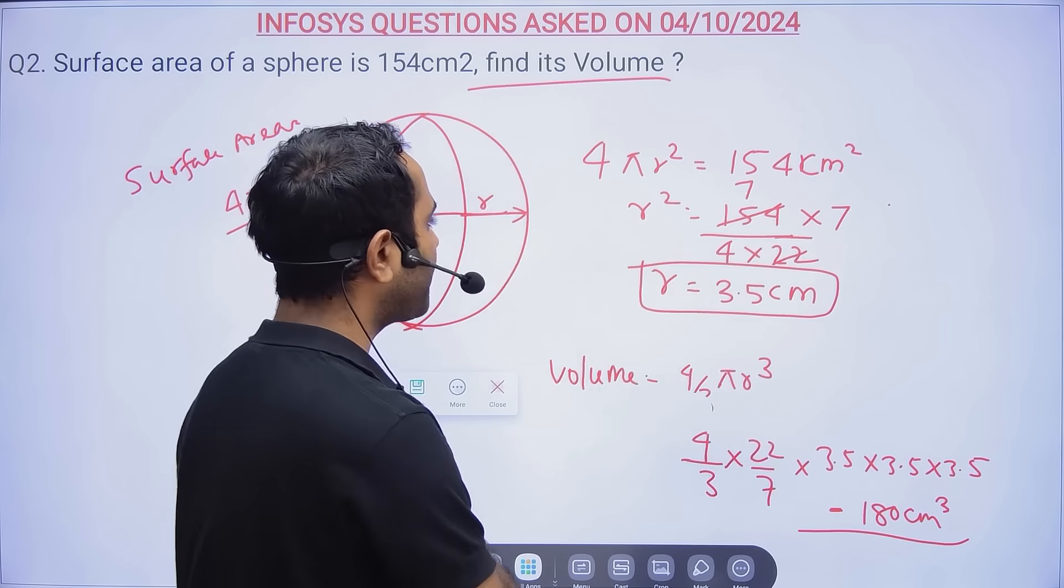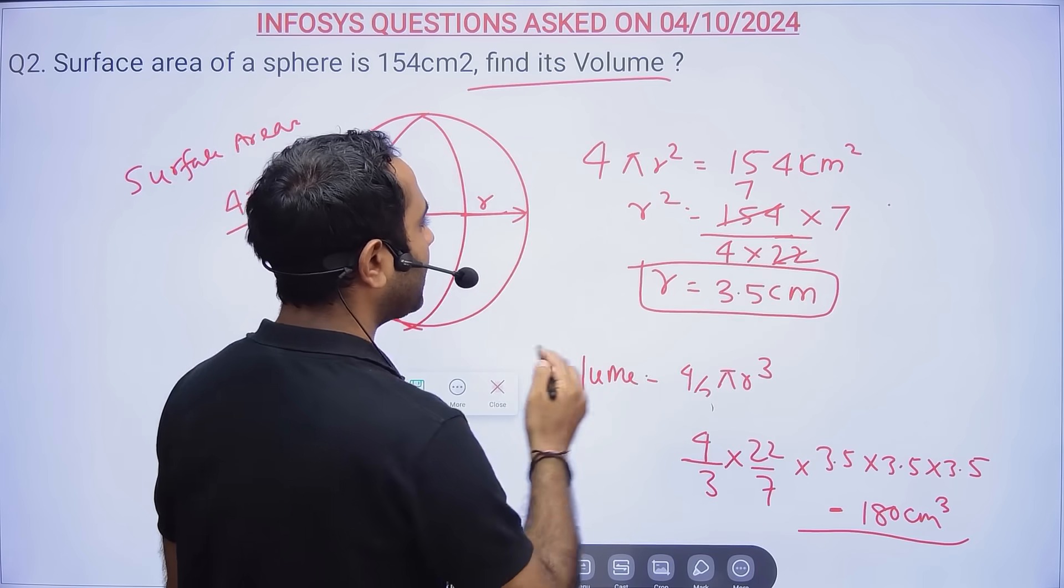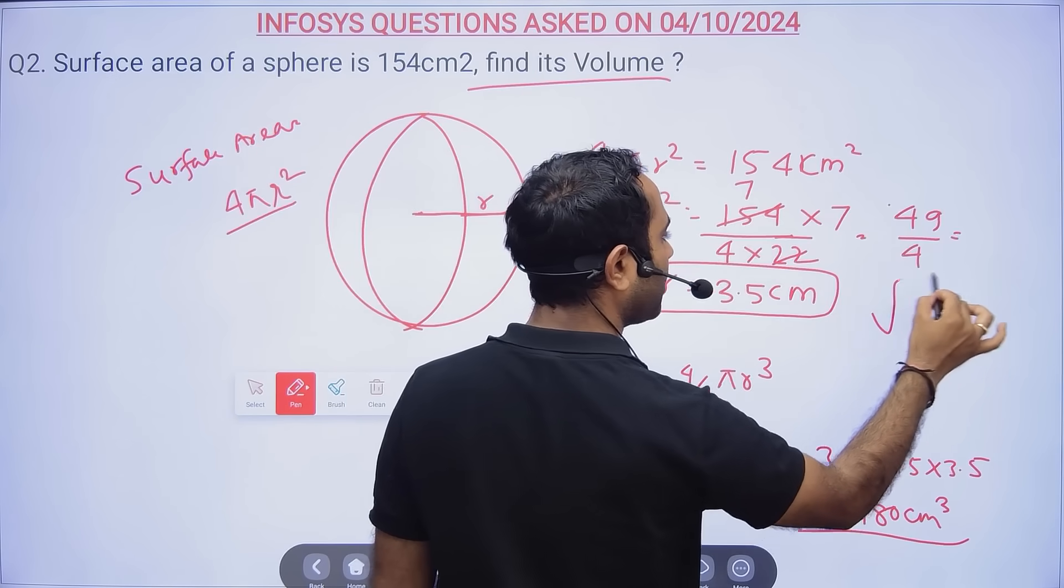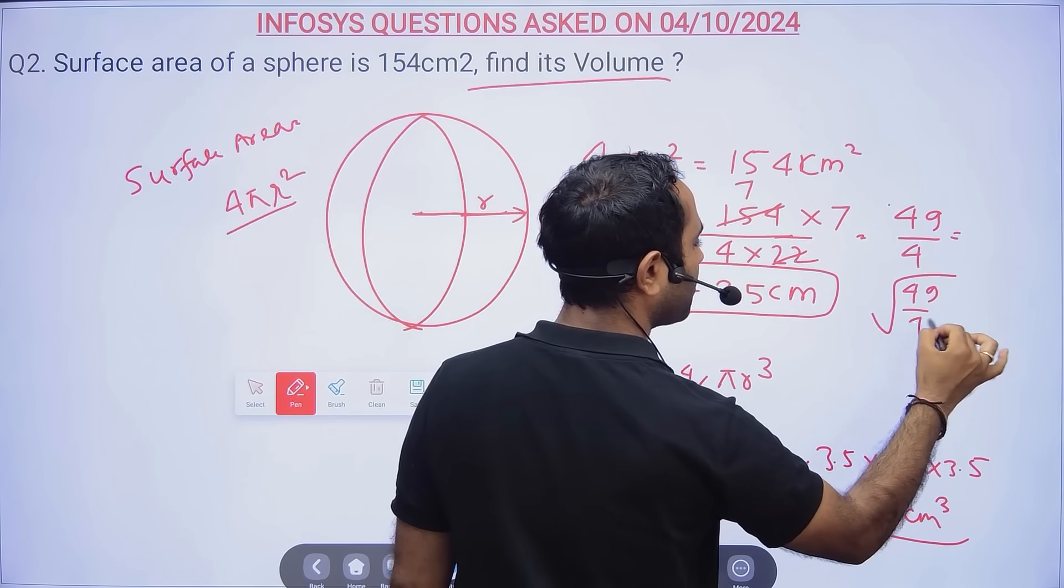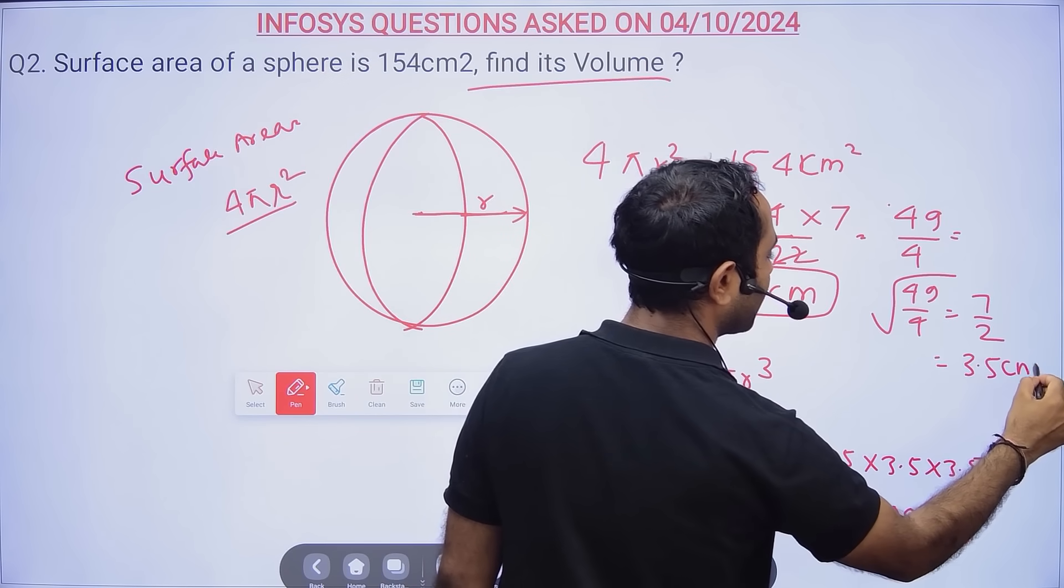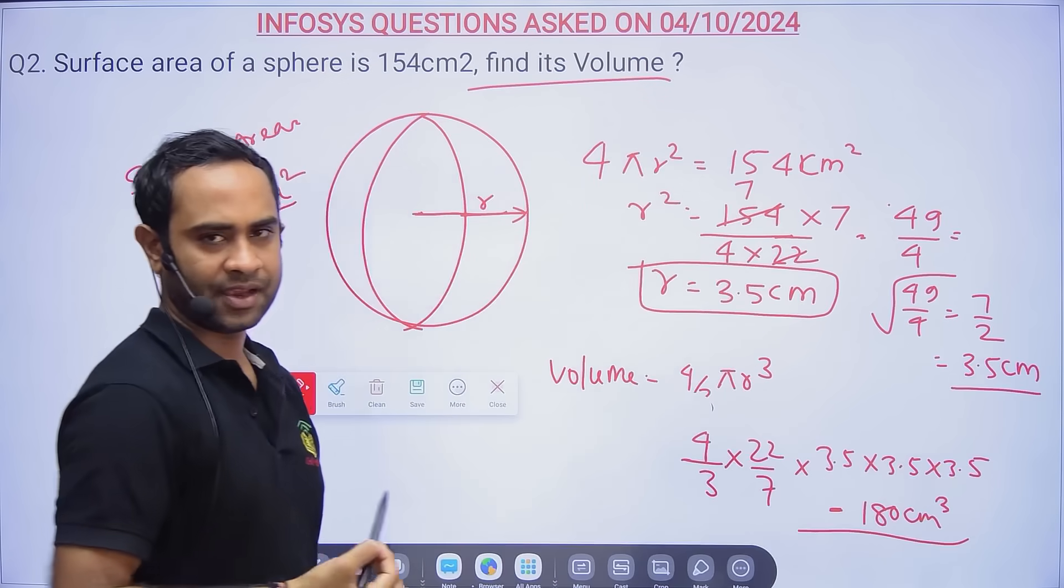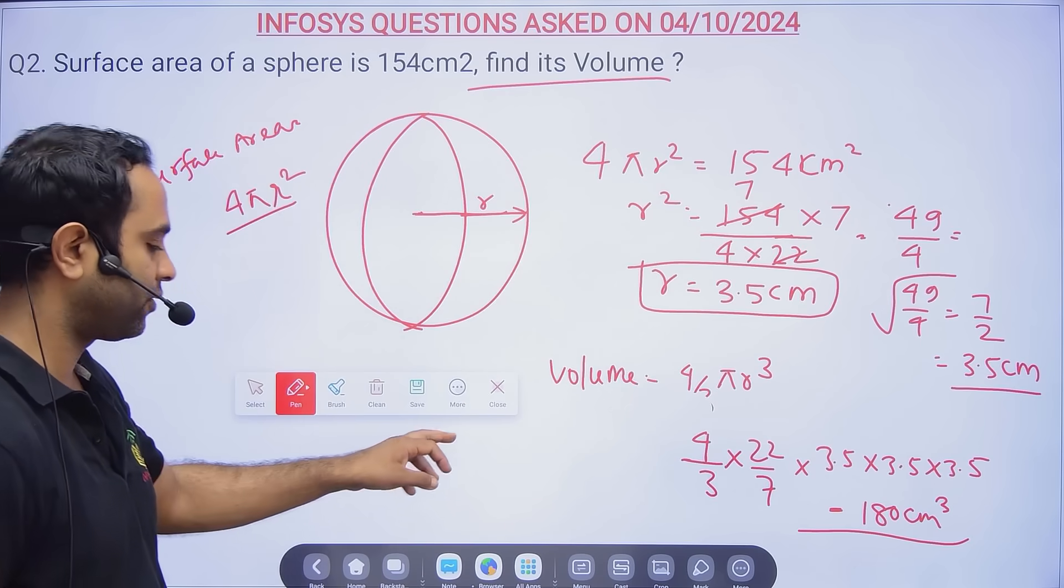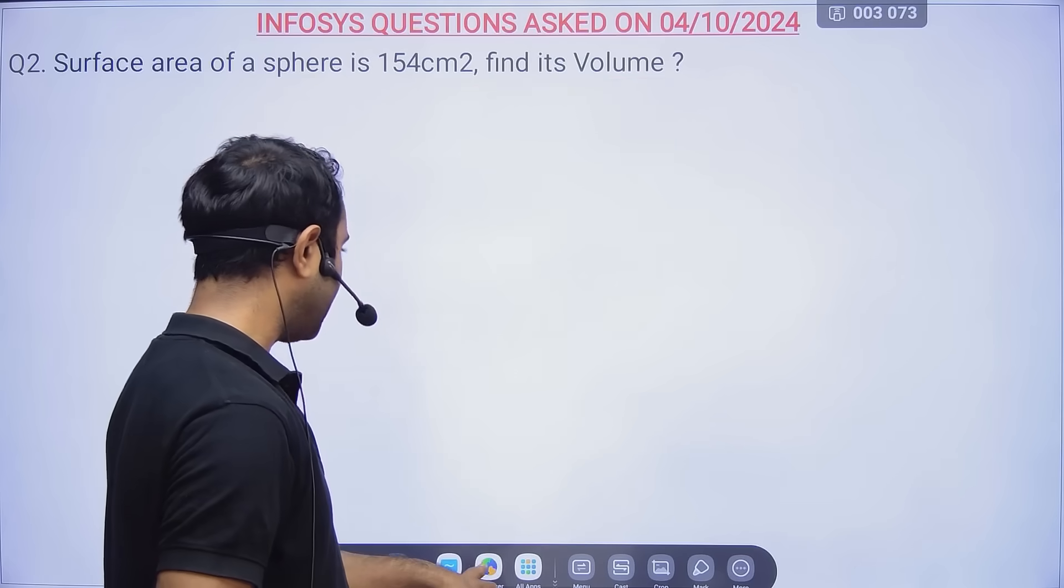154 ÷ (4 × 22/7) gives r² = 49/4. Taking square root, it will be 7/2, which is 3.5 cm. So around 180 cm³ was the answer for this particular question.